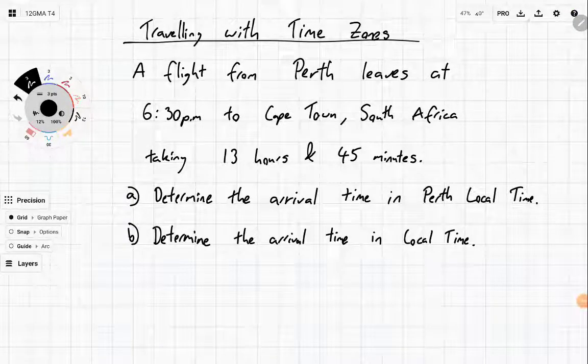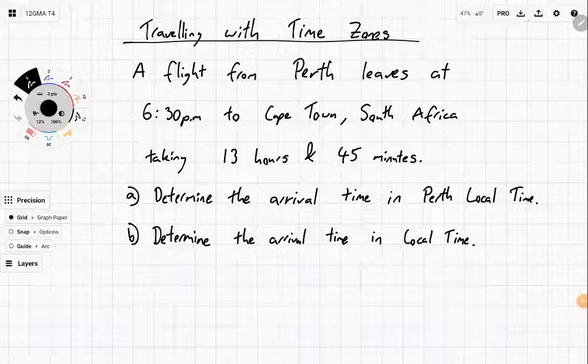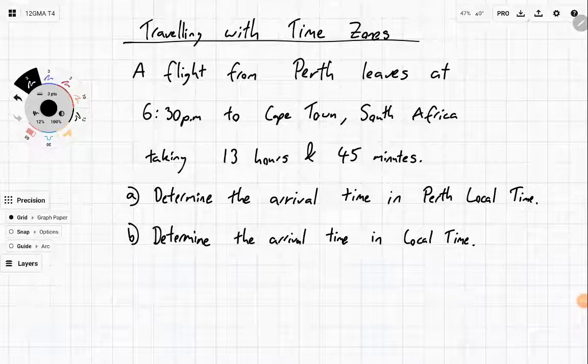Travelling with time zones. We're going to be looking at how to actually manipulate these things to work out how flights work. A flight from Perth leaves at 6:30pm to Cape Town, South Africa, taking 13 hours and 45 minutes. Determine the arrival time in Perth local time.